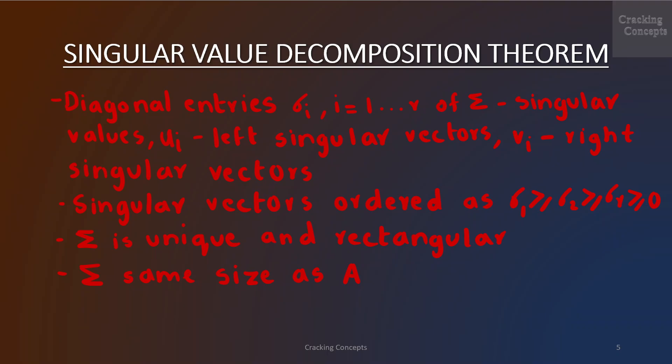The singular value matrix Σ is unique and rectangular. In particular, it is of the same size as A. This means that Σ has a diagonal submatrix that contains the singular values and needs additional zero padding.